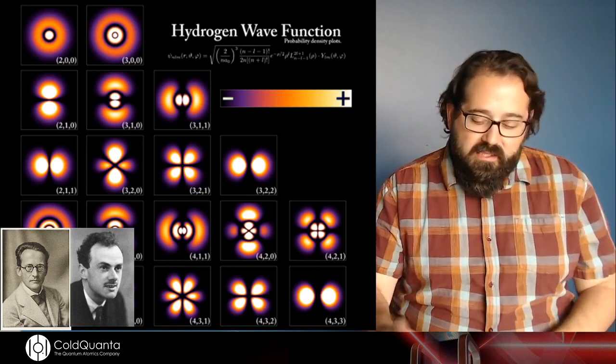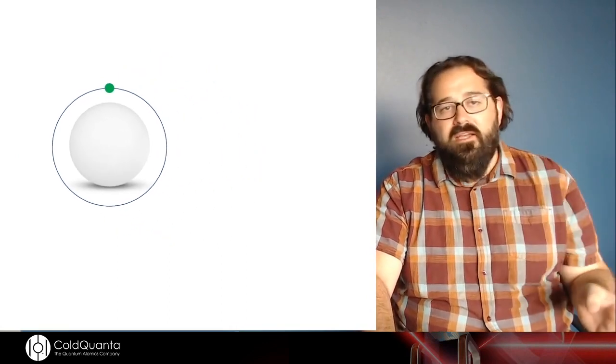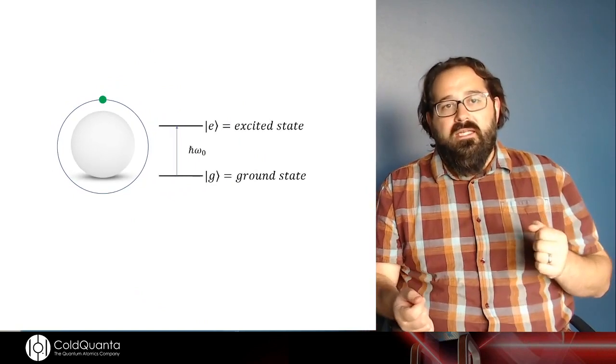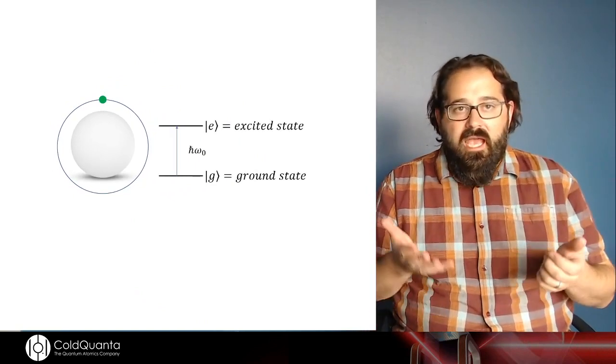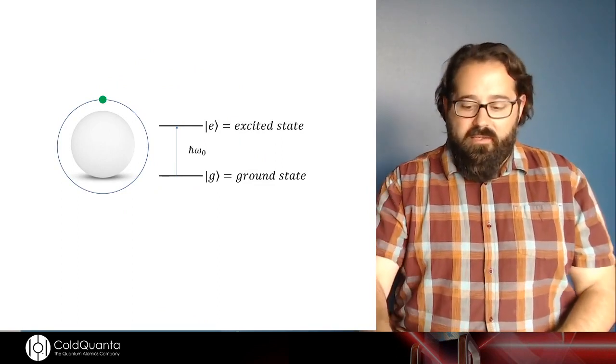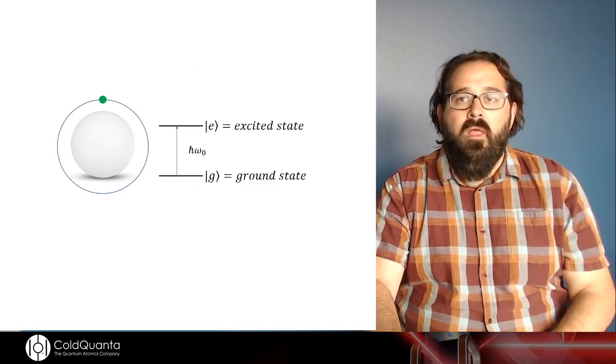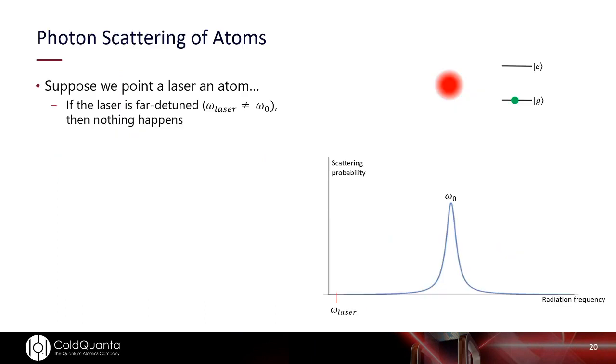For our purposes, this is a little bit deeper than we need to be. We can actually get some pretty good mileage out of the ball model, but we're going to sprinkle a little bit of Bohr on top of that. We're going to put a single valence electron floating around it, but I'm going to throttle back and say that my valence electron only has two states. There's an excited state, there's a ground state, and the energy splitting between them scales as this h bar omega naught, where omega naught is some frequency that's associated with that transition energy.